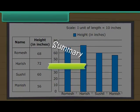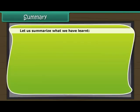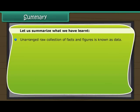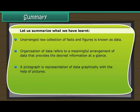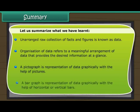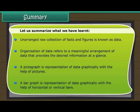Summary: Unarranged raw collection of facts and figures is known as data. Organization of data refers to a meaningful arrangement of data that provides the desired information at a glance. A pictograph is a representation of data graphically with the help of pictures. A bar graph is a representation of data graphically with the help of horizontal or vertical bars.